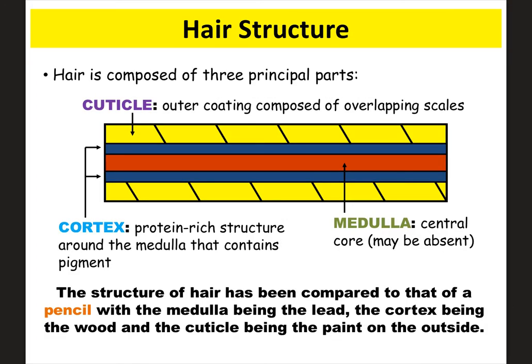There are three main parts of the hair. The outer part is called the cuticle — it's made of overlapping scales. The very middle is called the medulla, which is the central core. The cortex is just outside the medulla, and that's where the color originates. A useful analogy is a pencil: the outer paint covering is like the cuticle, the lead is like the medulla, and the wood underneath the paint is like the cortex.